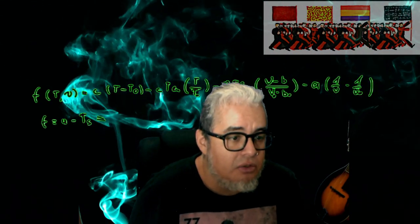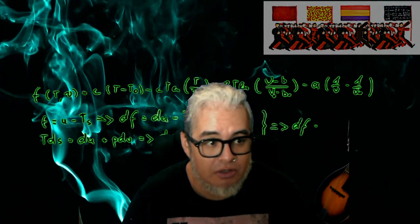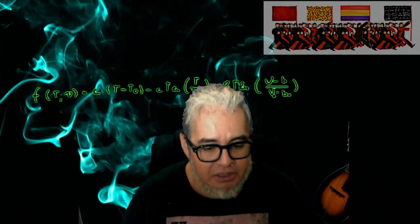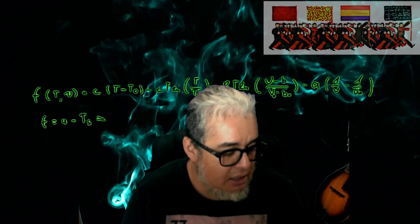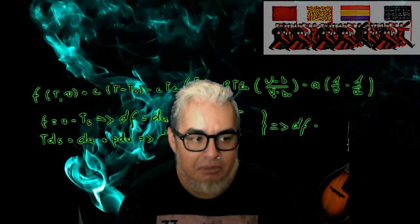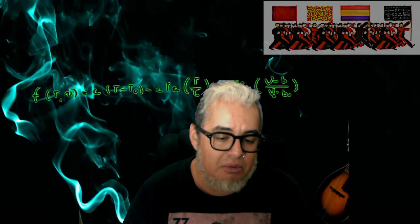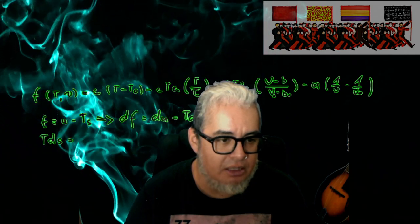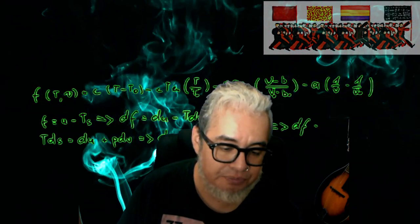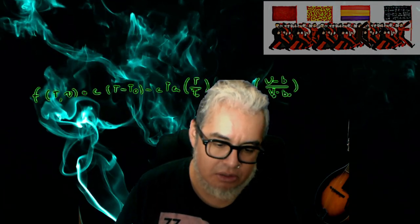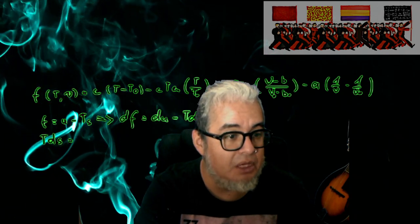Hola a todos, bienvenidos a una nueva sesión de este minicurso de inferencia estadística. Vamos a empezar hoy con el último tema, que es pruebas de hipótesis. Esta semana ya tendríamos que terminar lo que teníamos que ver en este minicurso. Hoy empezamos a ver pruebas de hipótesis, vamos a empezar con un ejemplo sencillo y con algunas definiciones formales, y vámonos a trabajar al pizarrón.